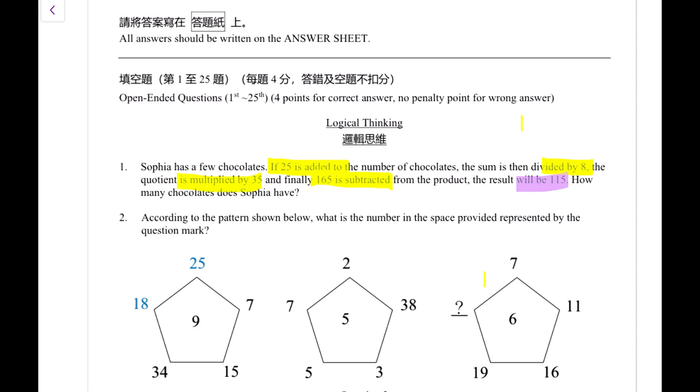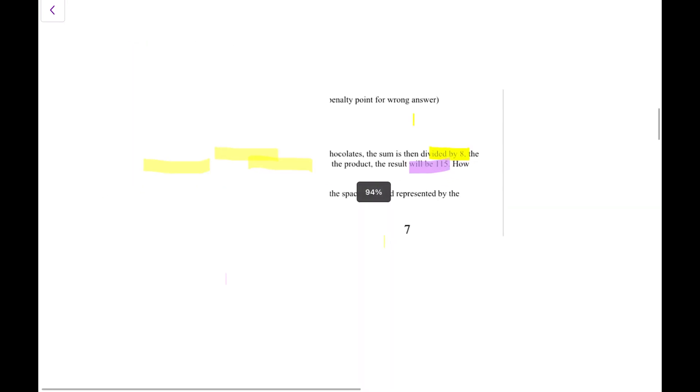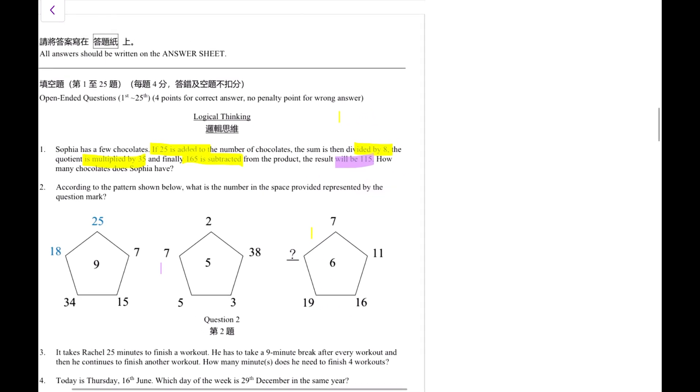In this question, you can start from the beginning, but it will be very complicated and it will involve variables. So if you move backwards, that is much easier. So let's start with the answer that she gets at the end. So she has 115 at the end of all the calculations. Let's move backward. So first, this says 165 is subtracted. That means in the reverse calculation, we have to add 165. So the answer is 280.